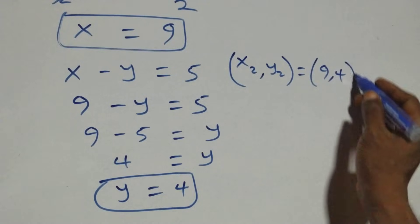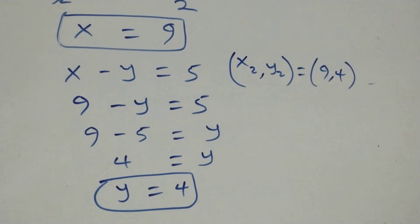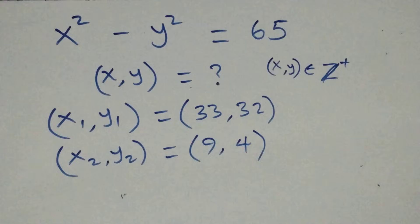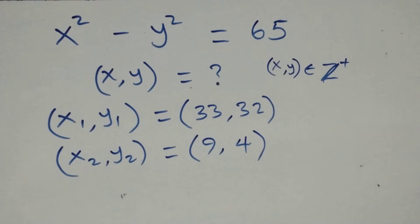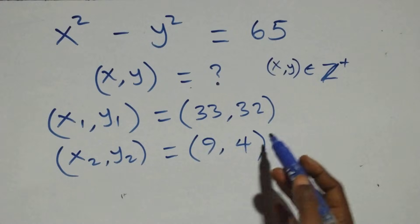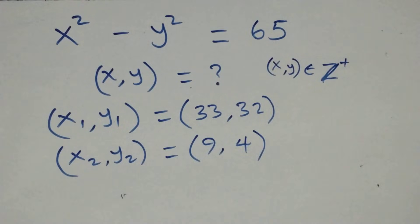The second set of solutions is x₂, y₂ equals (9, 4). So in this problem we have these two sets of solutions as possible positive integer solutions.